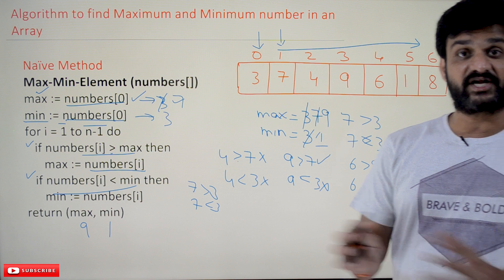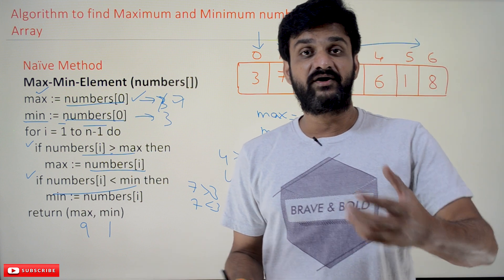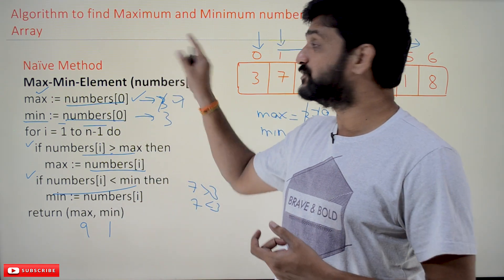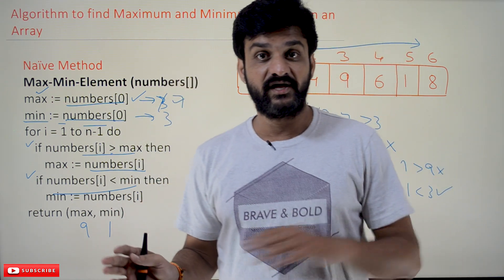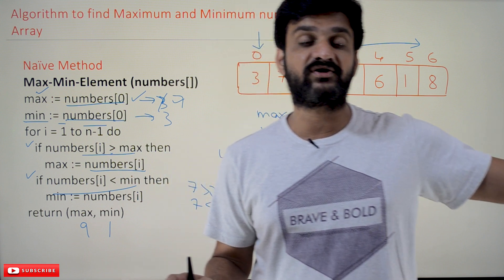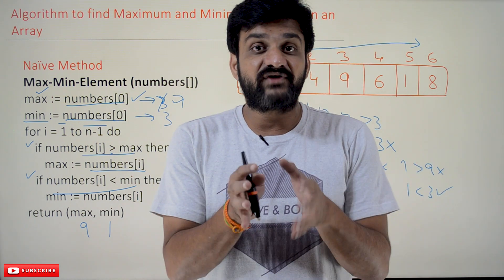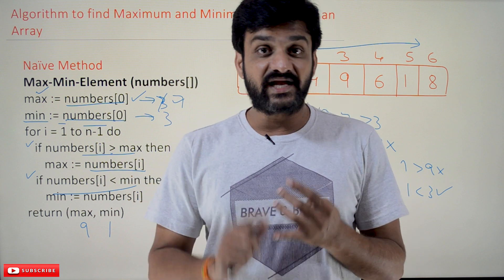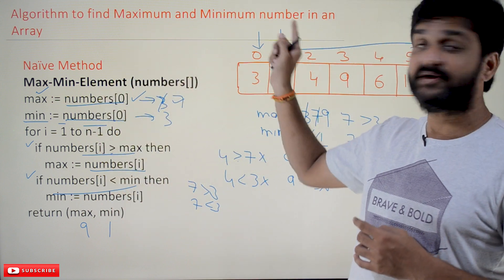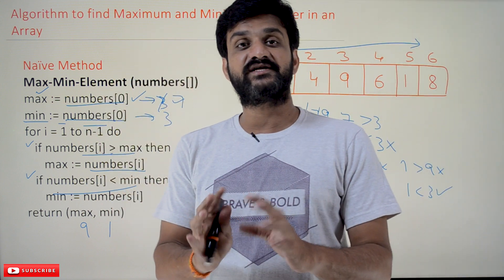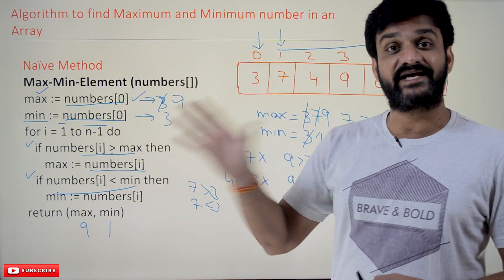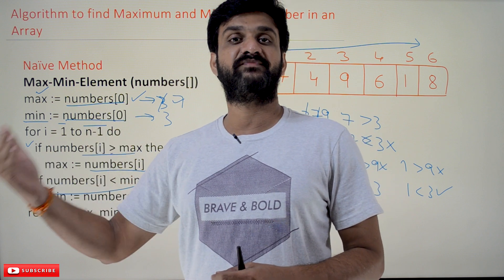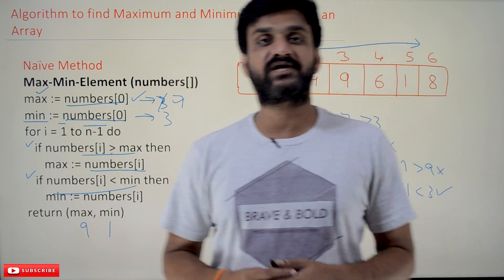This is the naive method — a basic iterative approach. There is another method to find the maximum and minimum using the divide and conquer technique. In our previous videos we started the divide and conquer classes, where we mentioned four different algorithms using this technique. The last one is finding the maximum and minimum. In the next class we will try to understand finding the maximum and minimum using the divide and conquer technique.